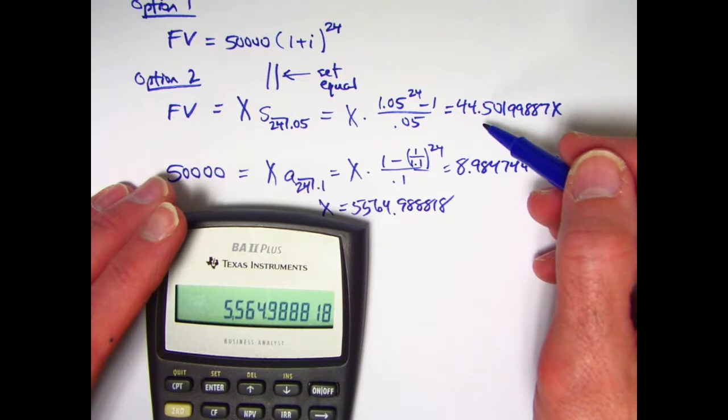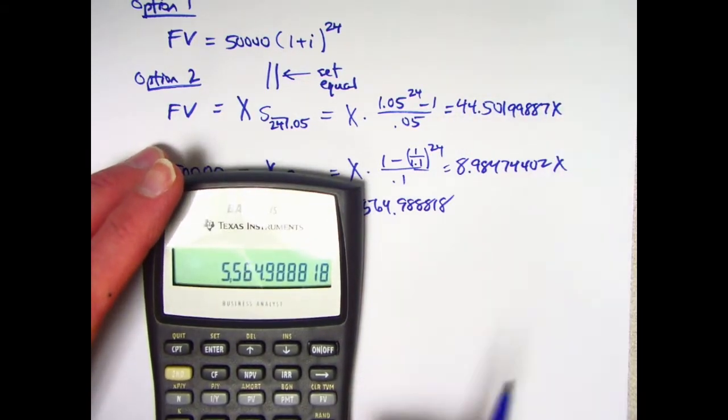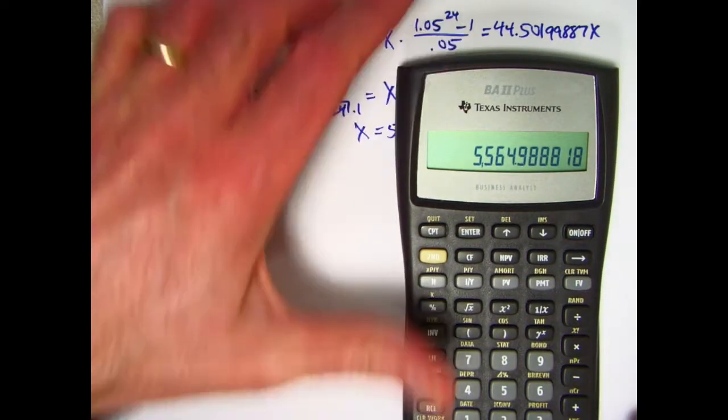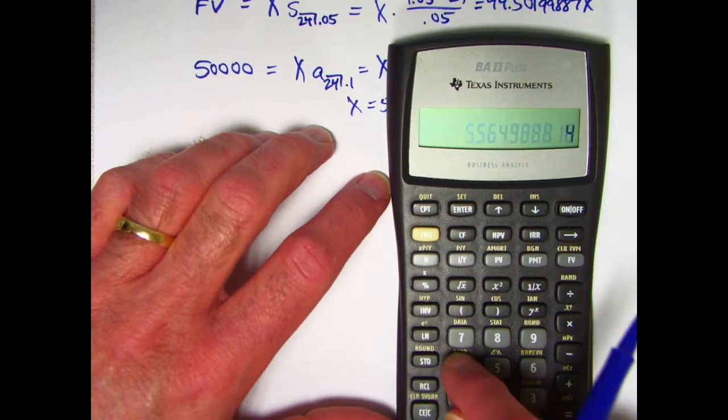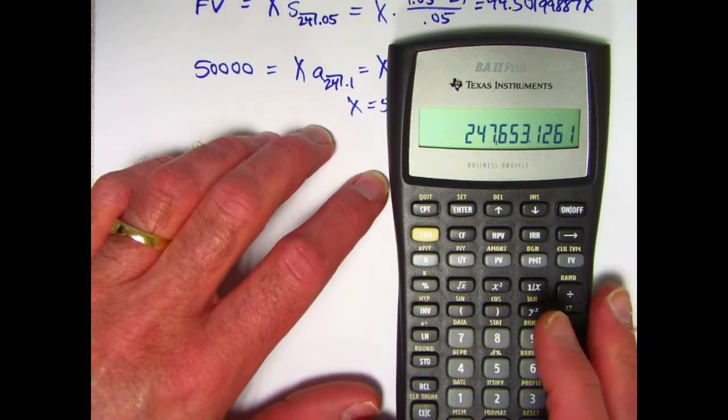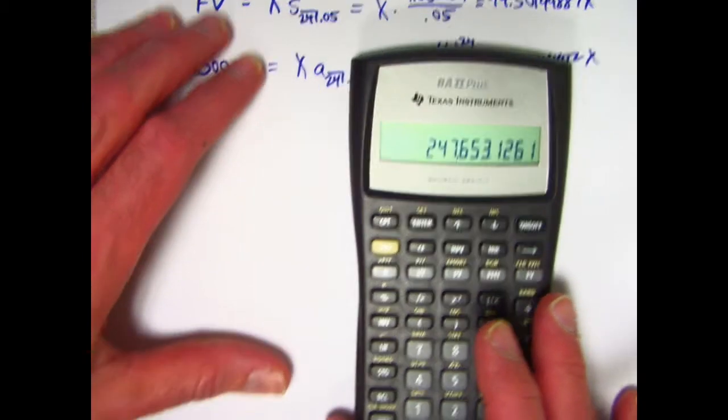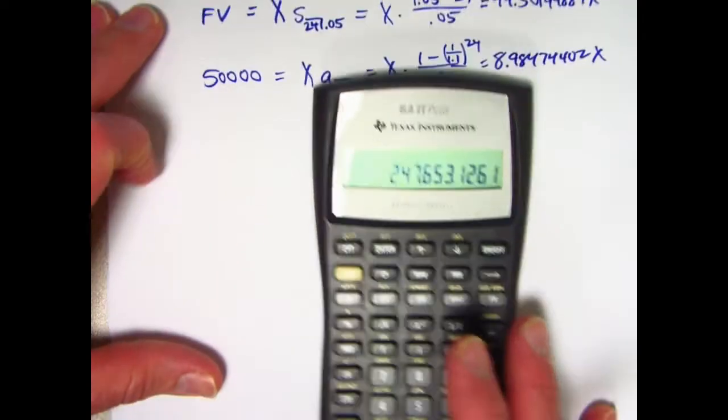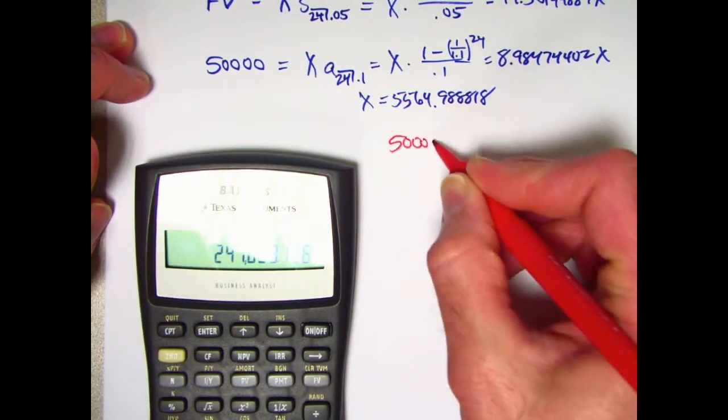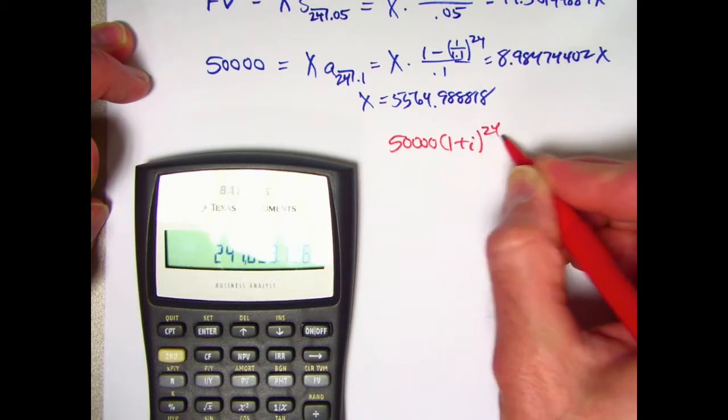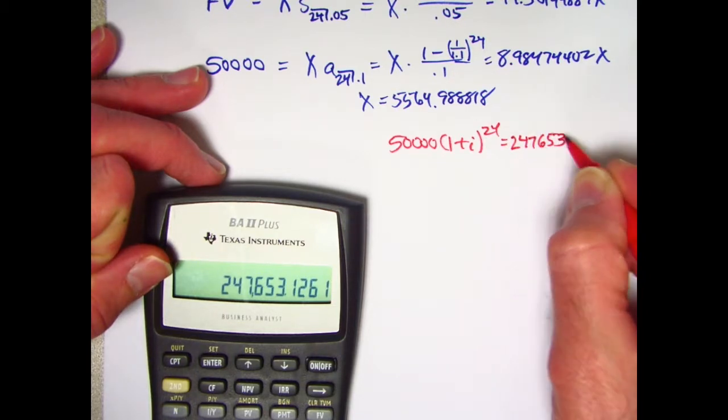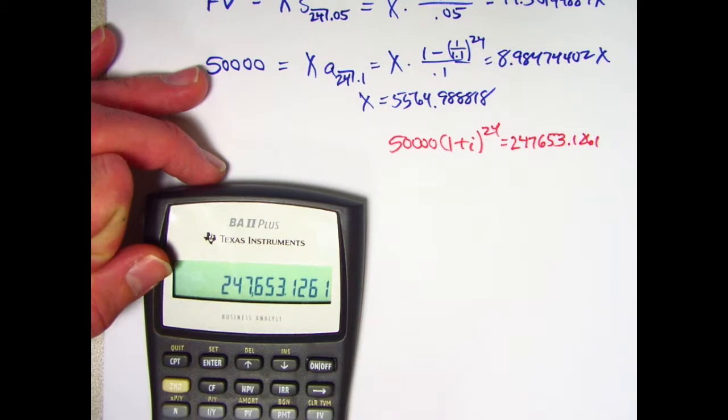That helps me now to find the future value that both of these things are equal to. I need to now multiply this times 44.501.99887. 247,653. Set that equal now to this and solve for I.